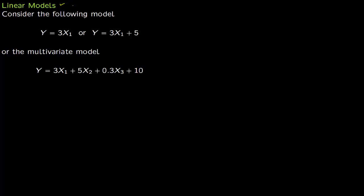Consider the following linear model: y is equal to 3x1. Here, y is called the response variable and x1 is called the predictor. If you set x1 as 2 then y equals 6; if you set x1 as 5 then y equals 15. There is nothing special about this model — you could add a constant to it, giving a new model: y equals 3x1 plus 5.